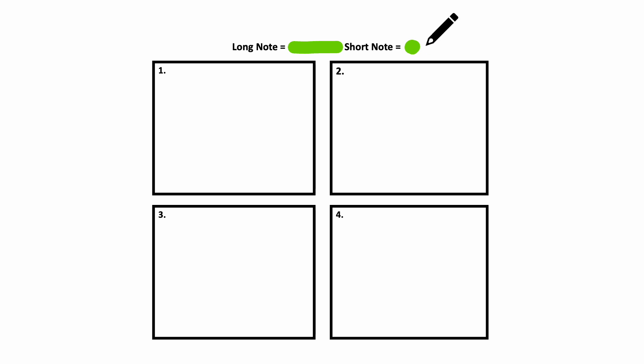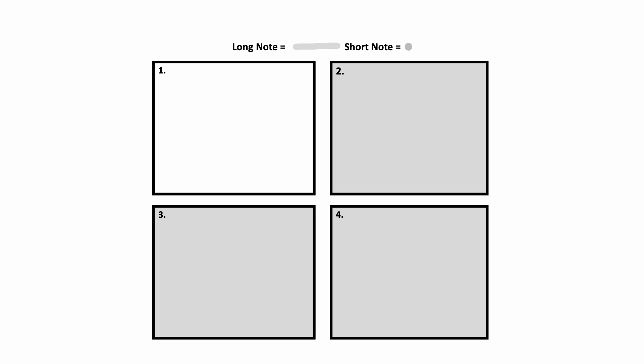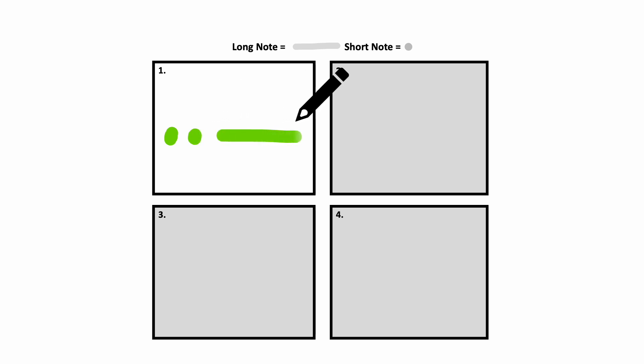Here is box number one. Here is box number one again. Did you draw a dot, a dot, and then a line? You were right — that was short, short, long.